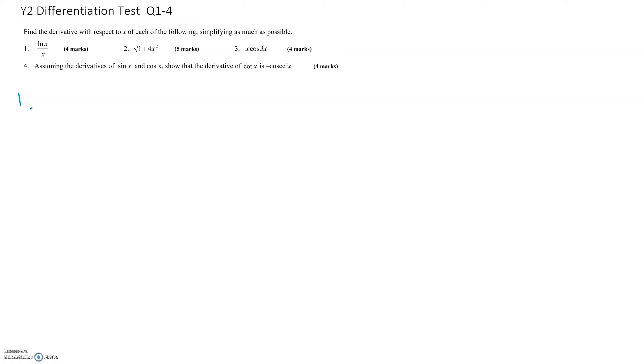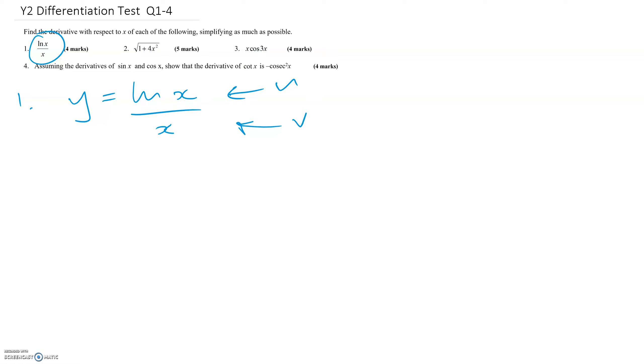This is the Year 2 differentiation test. Starting with question one, where you need to use the quotient rule. Let's write it out like this: y equals ln(x) over x. Let's call the numerator u and the denominator v. The quotient rule is in the formula book: dy/dx